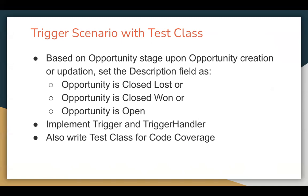If you open any existing opportunity where stage is populated with some value and you change that stage field value, then according to the change, you need to update the description with one of these three values. Since this is working for both insert and update, we need to implement a common method that will work for both requirements.